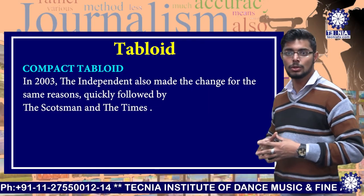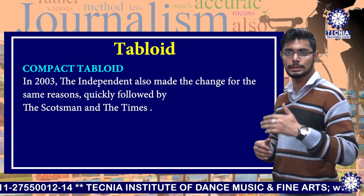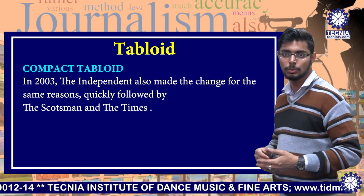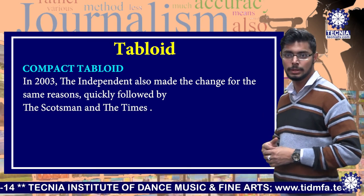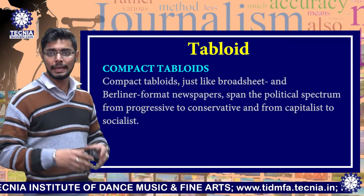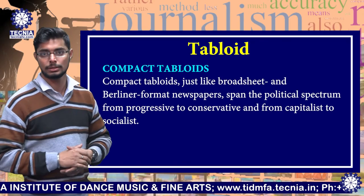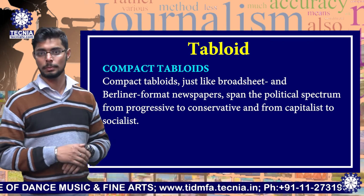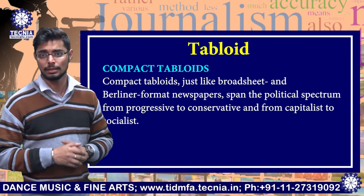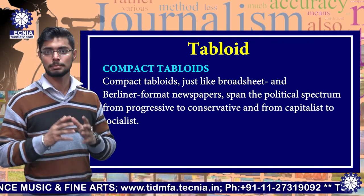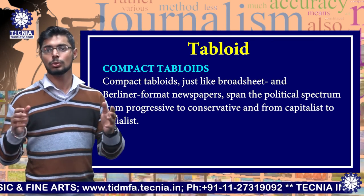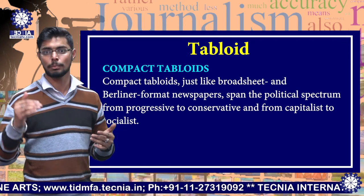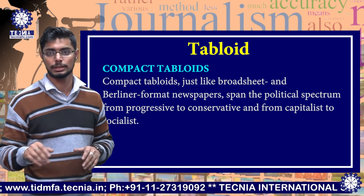the Independent also made the change for the same reasons, quickly followed by the Scotsman and the Times. Compact tabloids, just like broadsheet and Berliner format newspapers, span the political spectrum from progressive to conservative and from capitalist to socialist.